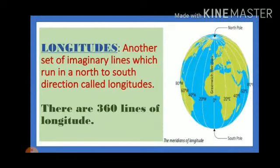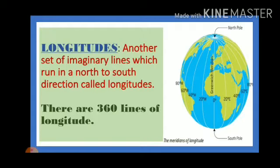Next, we will know about the longitudes. What are longitudes? Another set of imaginary lines which run in a north to south direction are called longitudes. Latitudes run in an east to west direction, but longitudes run in a north to south direction. All longitudes meet each other at the poles, so unlike latitudes, longitudes are not parallel to each other. You can see in this picture that all the longitudes are meeting with each other at the north pole as well as the south pole.